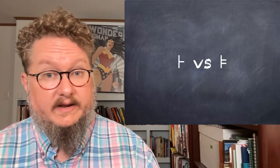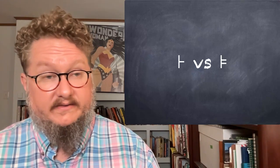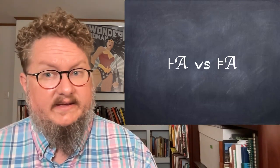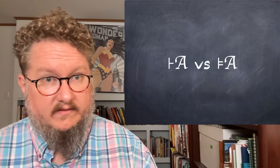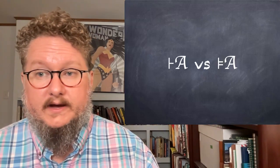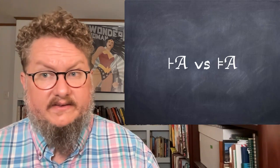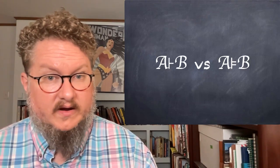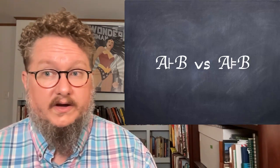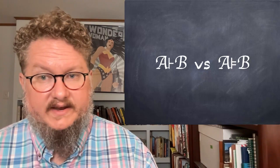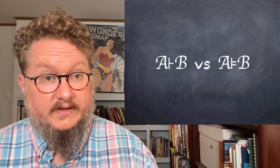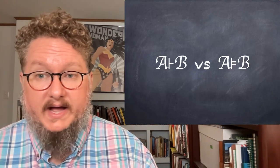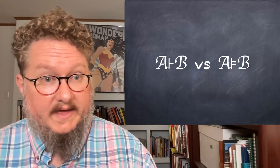We talked in the last unit about the difference between proof theoretic or syntactic and semantic analyses. On the left, the single turnstile ⊢ A says that A is a theorem of SL or QL. On the right, the double turnstile ⊨ A says that A is a tautology. Similarly, A ⊢ B says we can derive B from A, while A ⊨ B says A semantically entails B — if A is true, then B must be true. We don't need to mention truth values for derivability, but we do for semantic entailment.